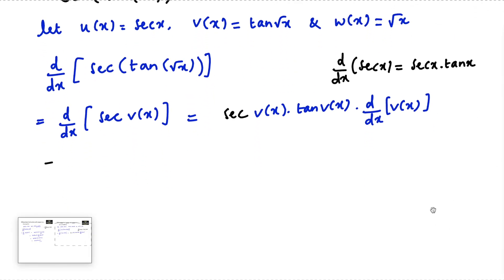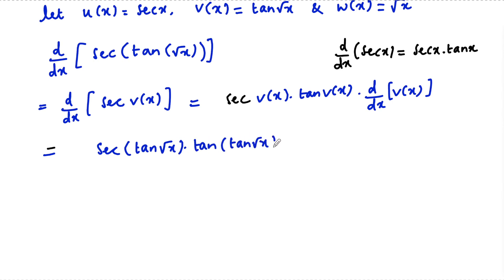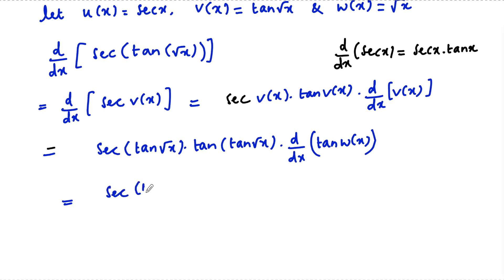Let us write v(x) = tan(root x). So we can write secant(tan(root x)) into tan(tan(root x)), multiplied by d/dx of tan(root x), where root x is w. So this equals secant(tan(root x)) into tan(tan(root x)).